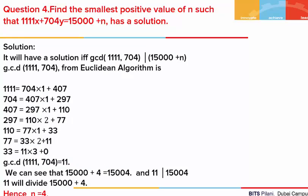Fourth question: find the smallest positive value of n such that 1111x + 704y = 15000 + n has a solution. To solve this Diophantine equation, we first check whether the GCD of these two integers divides the right hand side. The GCD from the Euclidean algorithm comes out to be 11. Since 11 will divide this term only for certain n, we check: if we divide 15000 by 11 there is a deficit, and if we add 4, this whole term becomes divisible by 11. So n = 4.